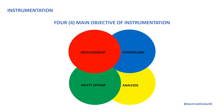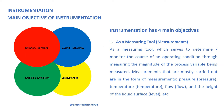The main objective of instrumentation. Instrumentation has four main objectives. One, as a measuring tool, which serves to determine and monitor the course of an operating condition through measuring the magnitude of the process variable being measured.